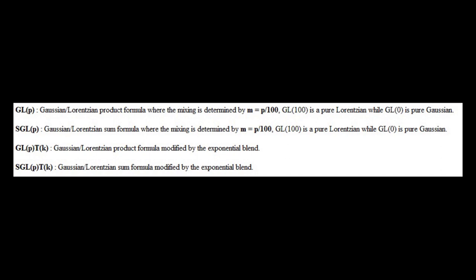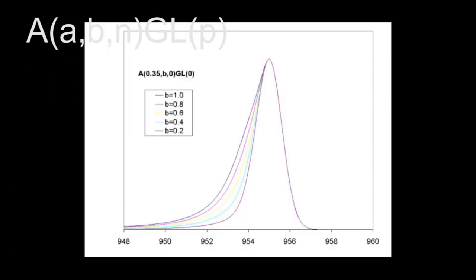SGLP is a Gaussian-Lorentzian sum formula where the mixing is determined by M = P/100. GL100 is pure Lorentzian while GL0 is pure Gaussian. GLPTK is a Gaussian-Lorentzian product formula modified by the exponential blend. SGLPTK is a Gaussian-Lorentzian sum formula modified by the exponential blend. AABGLP is a Gaussian-Lorentzian product formula modified by an asymmetric form. Examples are shown in this figure — here A is 0.35, B is varied from 0.2 to 1, N is kept 0, considered as pure Gaussian, thus it is GL0.